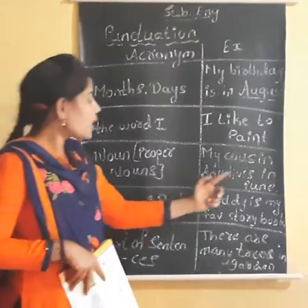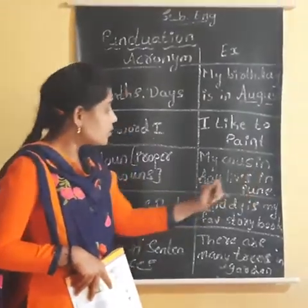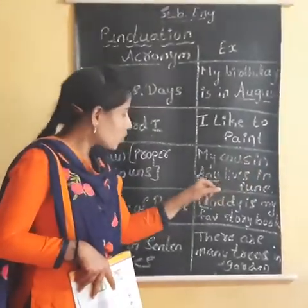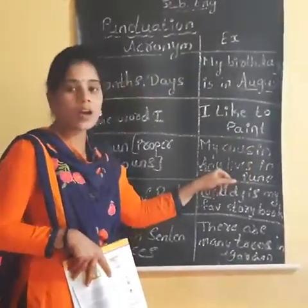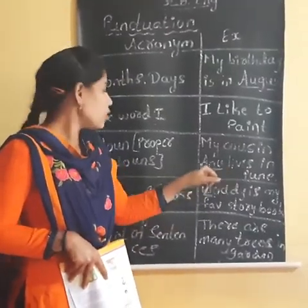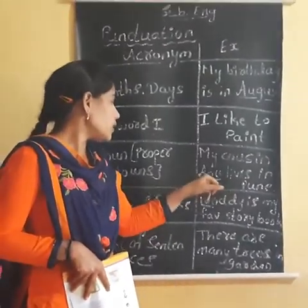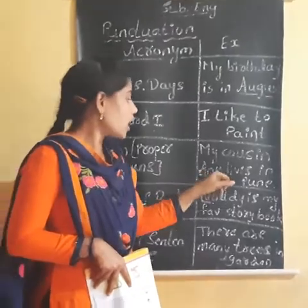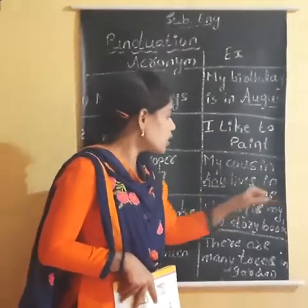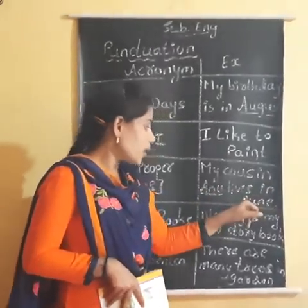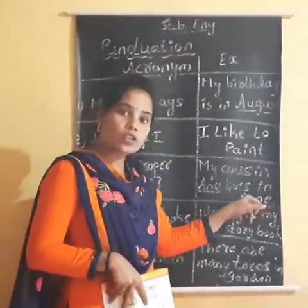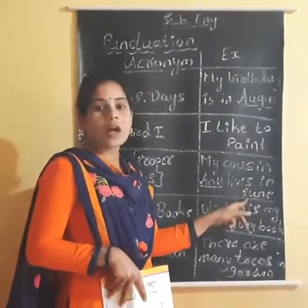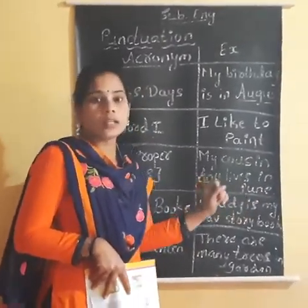Example: 'My cousin Anu' — Anu is a particular name, so I write the first letter in a capital. 'Anu lives in Pune.' Pune is also a proper noun, so here I used a capital letter.